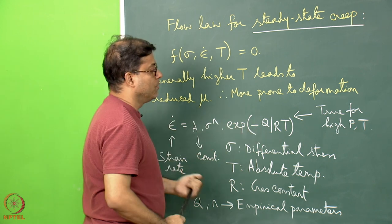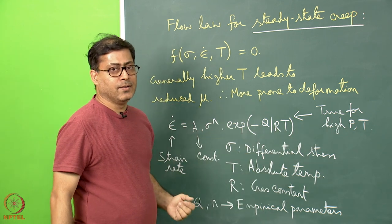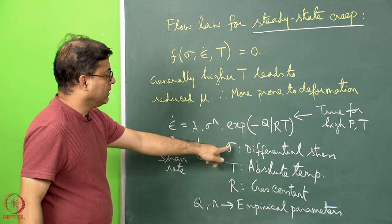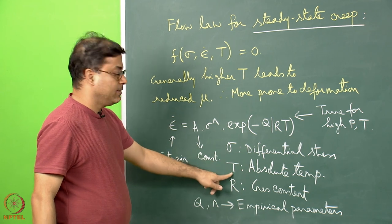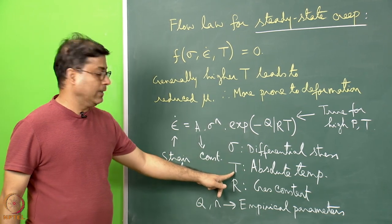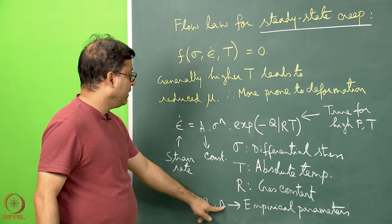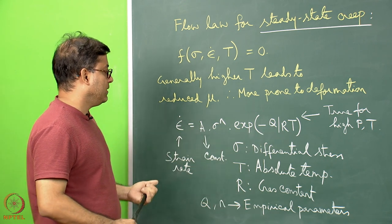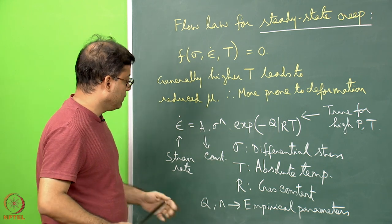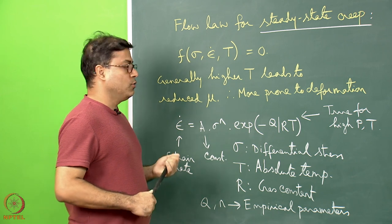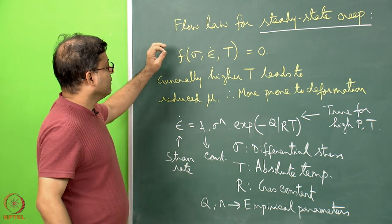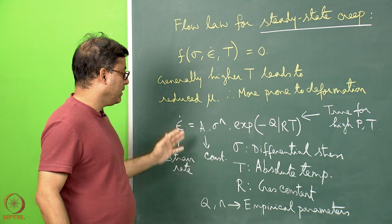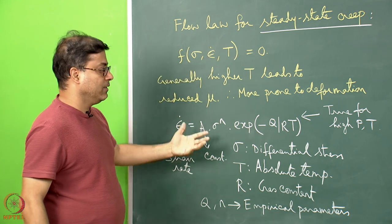A popular form of the flow law for high pressure-temperature deformation is: ε̇ = A · σᴺ · e^(−Q/RT), applicable to deep crustal or upper mantle deformation. Here σ is differential stress, T is absolute temperature in Kelvin, R is the gas constant, and Q and N are empirical parameters. Geologists fit Q, N, and A for different rock types, though a most accurate equation remains elusive and is continually revised.